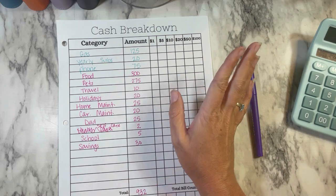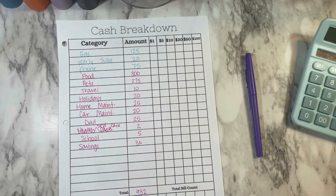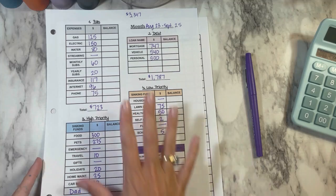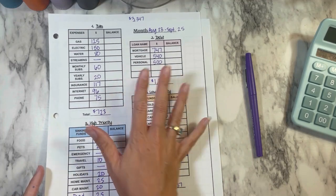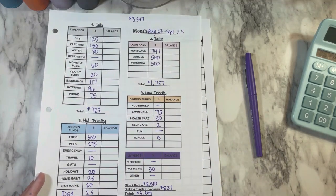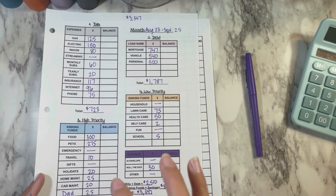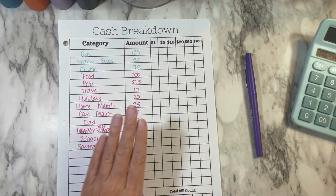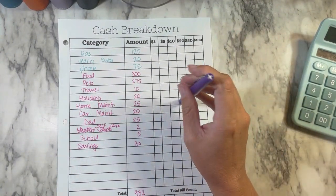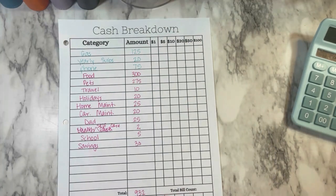So today we are going to be doing my cash breakdown for the budget that I did in my last video. I've decided what categories I want to pull cash for, and we're going to decide what denominations we want here.